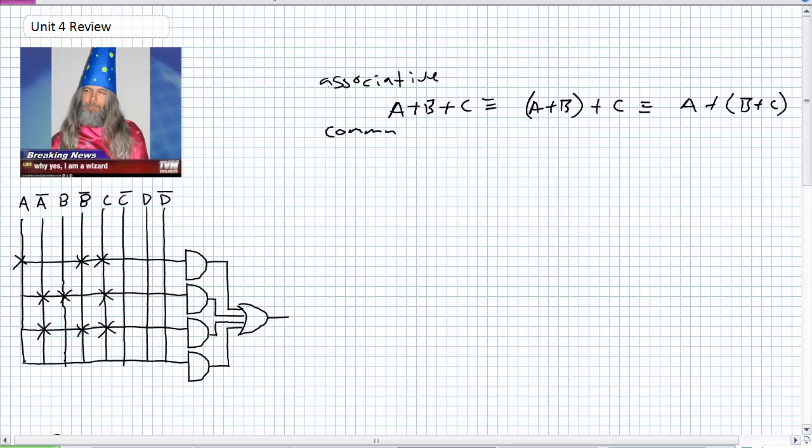Commutative, that's the easiest one. A and B is the same thing as B and A, A or B same thing as B or A.